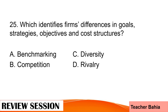Number 25. Which identifies firms' differences in goals, strategies, objectives, and cost structures? A. Benchmarking, B. Competition, C. Diversity, or D. Rivalry? The correct answer is letter C. Diversity.